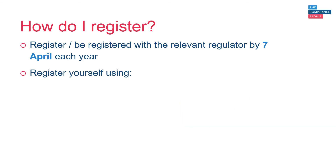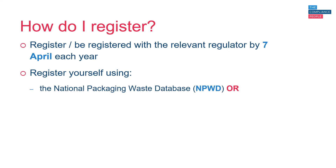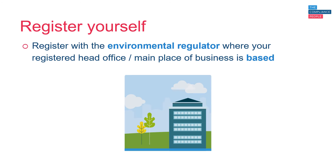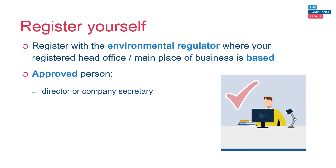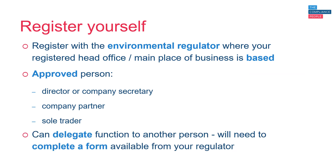If you choose to register yourself, you'll need to register with the environmental regulator where your registered head office or main place of business is based. To submit a registration, you must be an approved person — this is a director or company secretary, a company partner, or a sole trader. You can delegate this function to another person, but they'll need to complete a form which you'll need to sign, and this is available from your regulator.